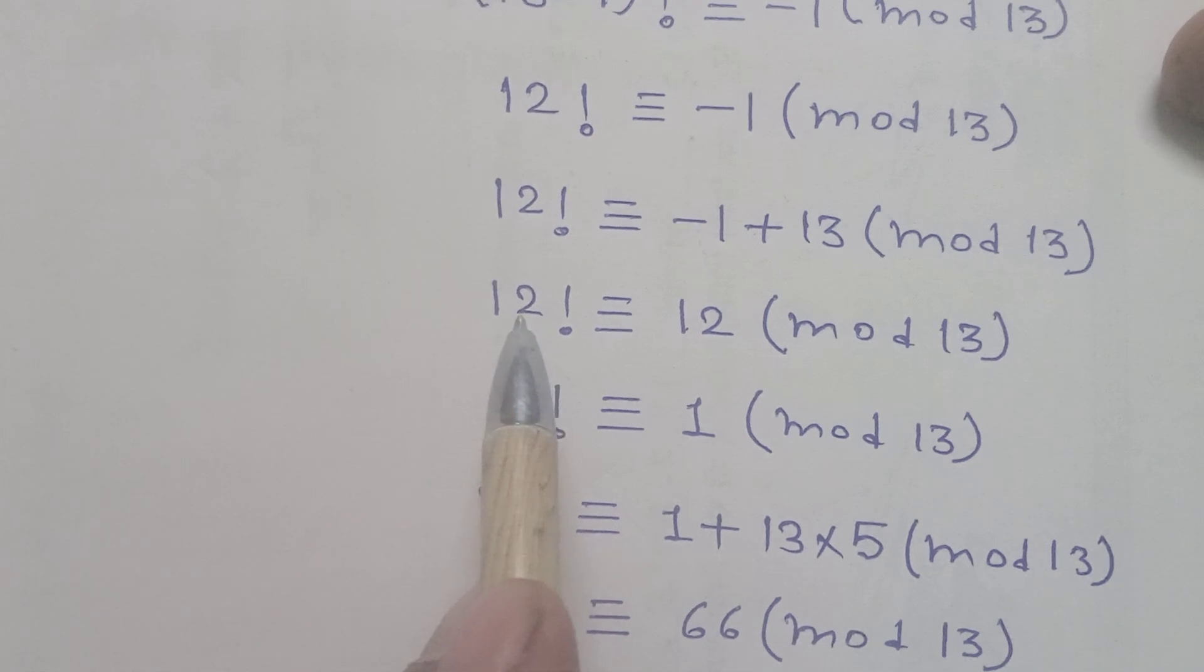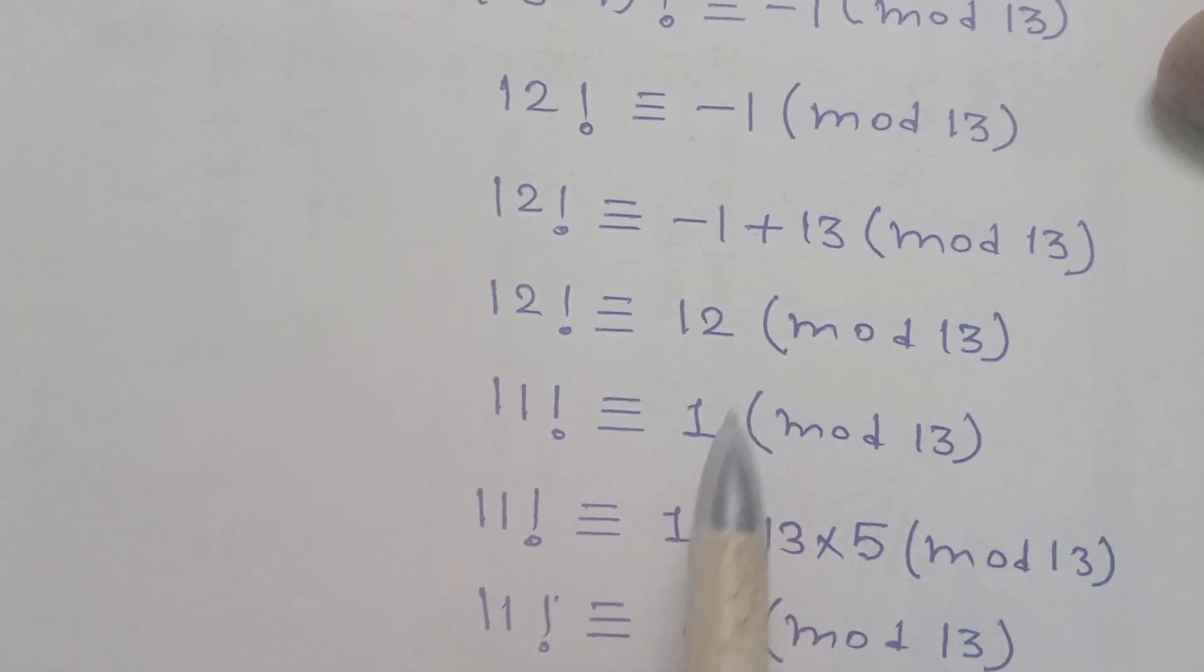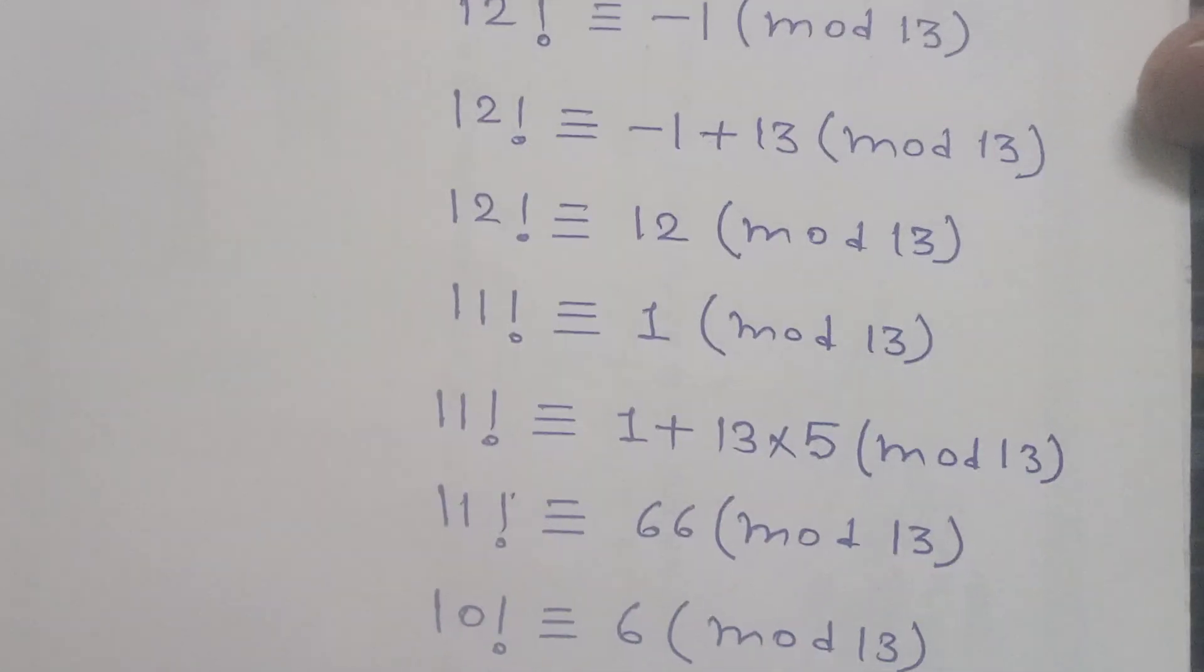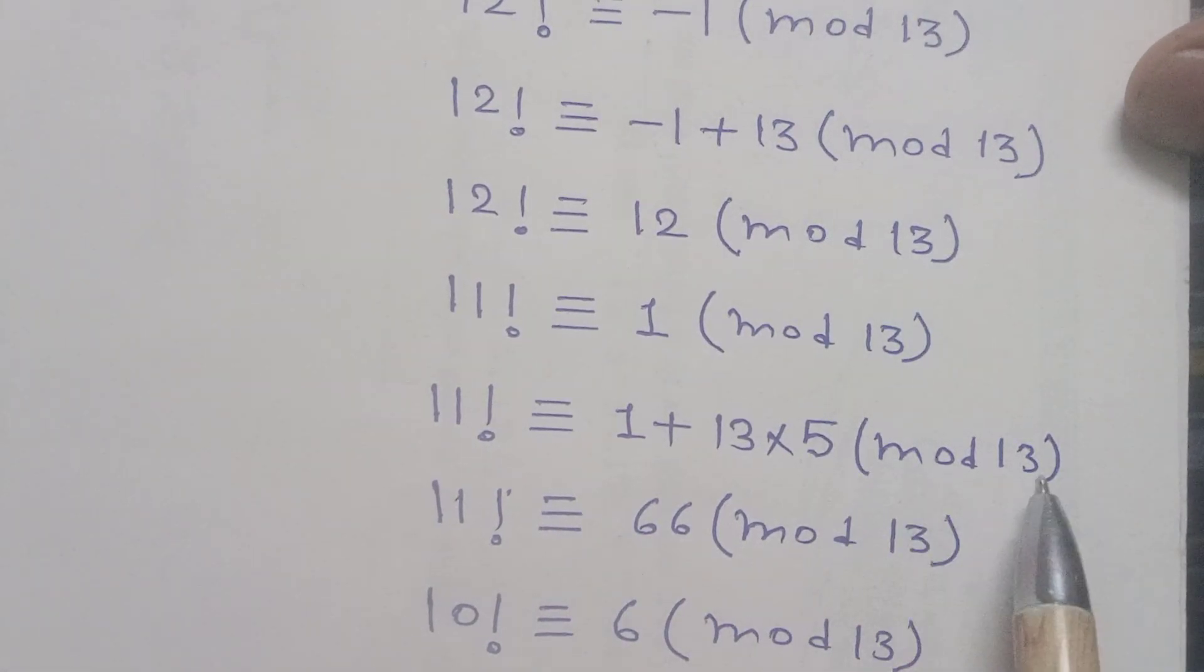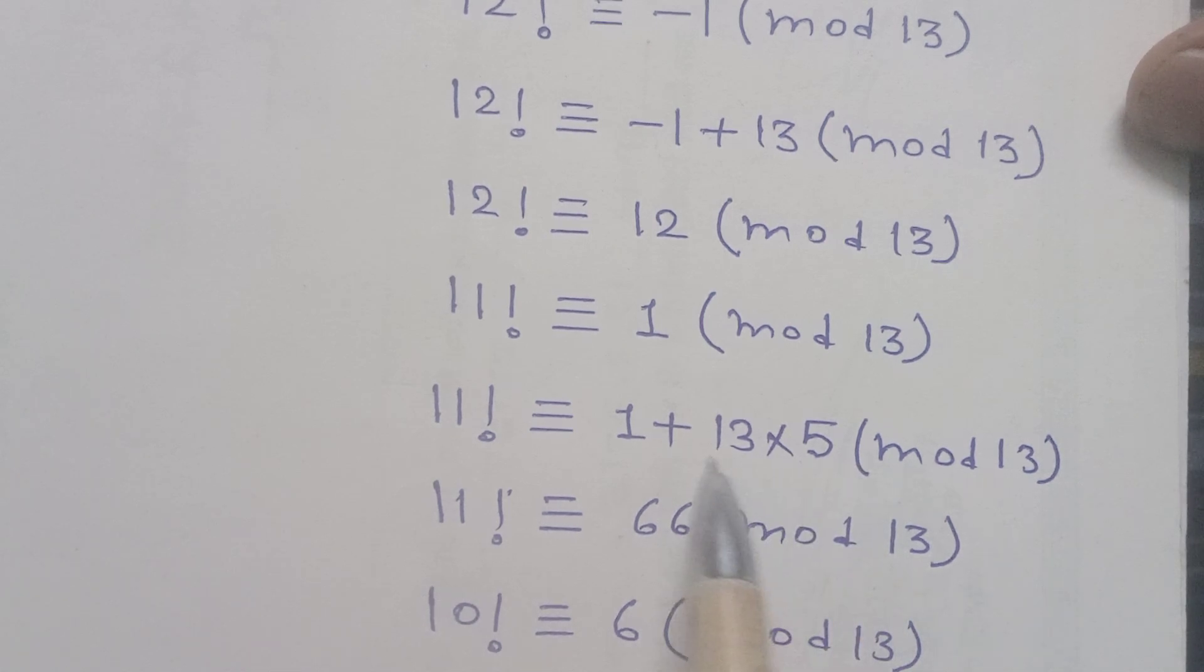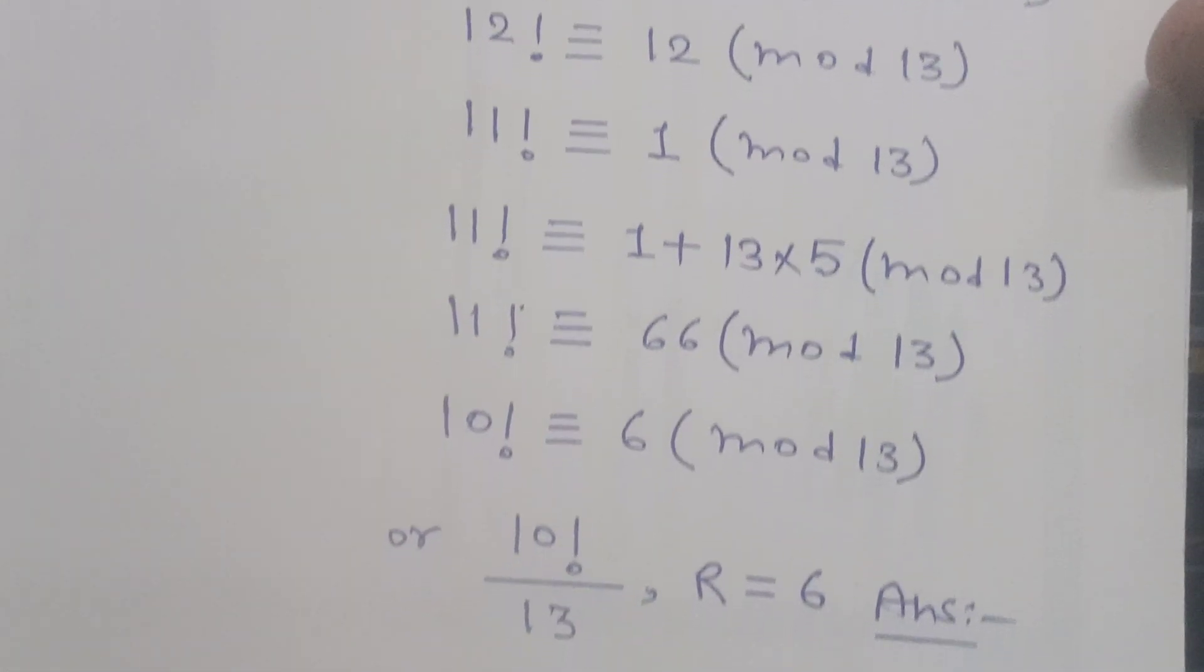So there will be 11! is equal to 1, and now 1 will be common from modulo 13. 13 times 5 is 65, and 65 plus 1 is 66. Again we divide by 11 on both sides.